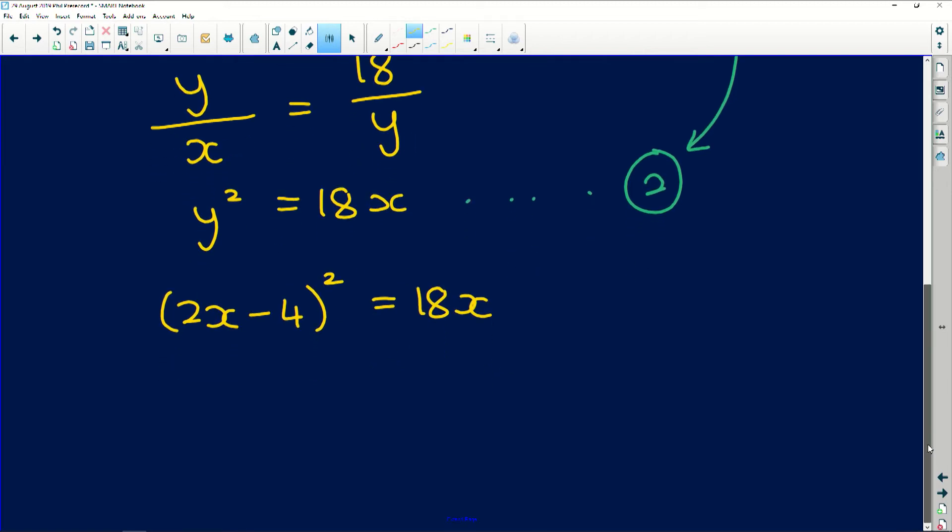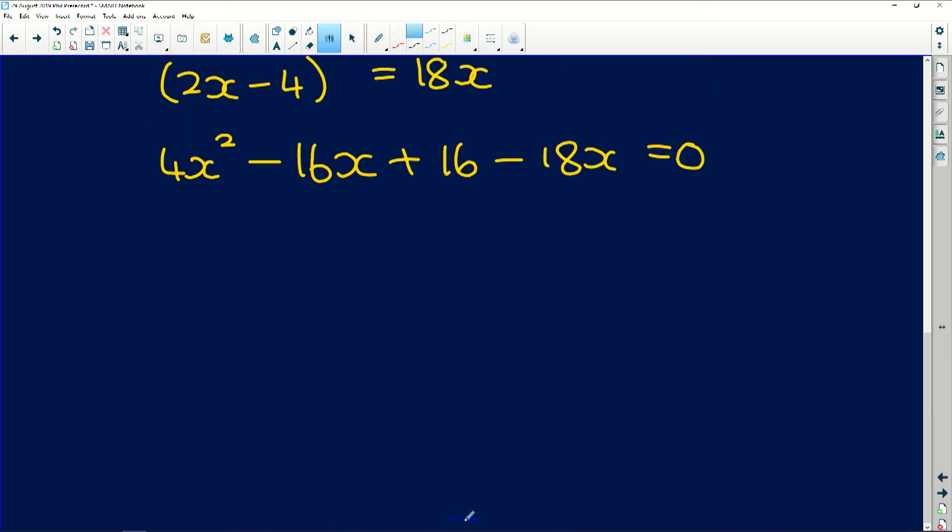So now let's multiply out this brackets. 2x squared is 4x squared minus twice their product. So 4 times 2 is 8x multiplied by 2 is 16x. And then we square the last term and we get 16. Now we need to subtract 18x and we get 0. Standard form.